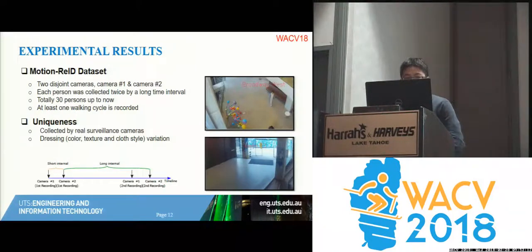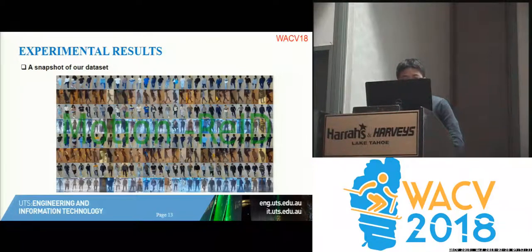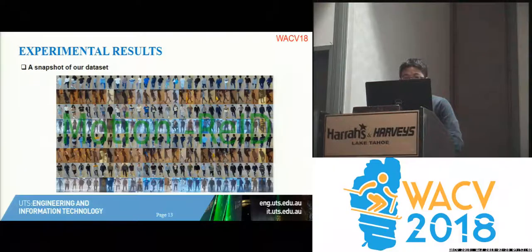For the experiments, we collected data ourselves using a surveillance camera on our campus. We have camera one and two and asked PhD and master students to wear different clothes after a month or a week to collect the data. Here is a snapshot of our video dataset — each column belongs to the same person. Even knowing the students, if you only watch one frame of the video it's very hard to identify the same person.